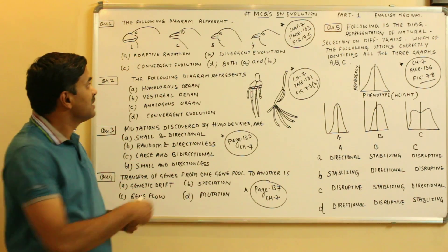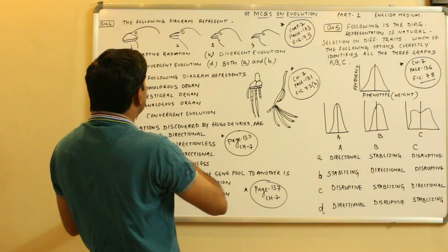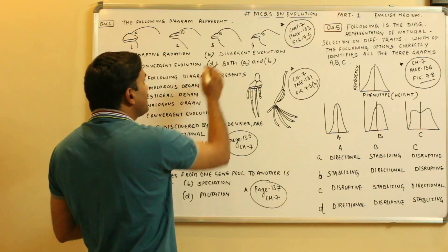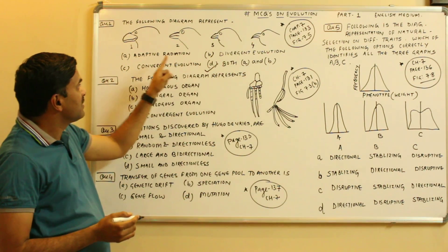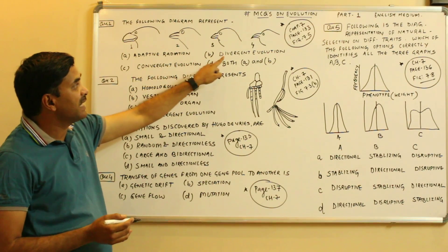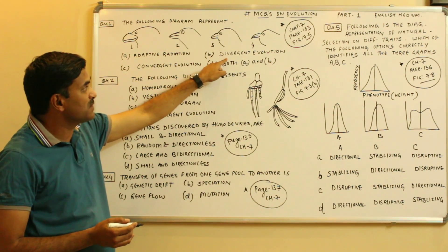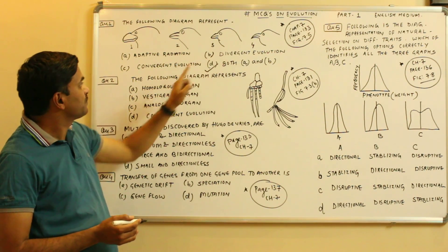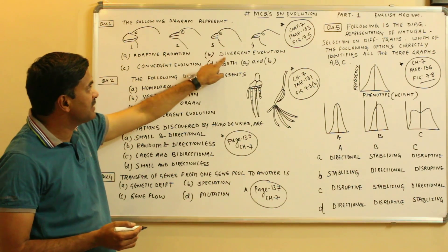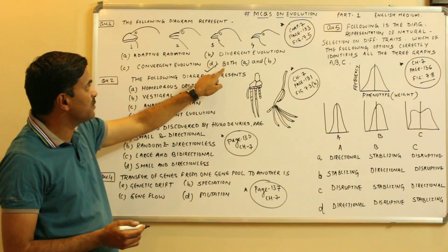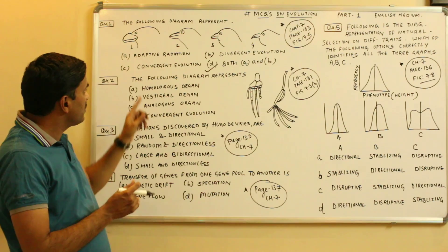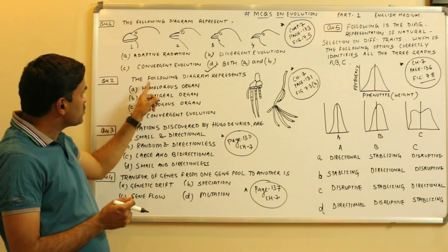So question number one has the best answer: both A and B — adaptive radiation as well as divergent evolution. Option D is the correct one.